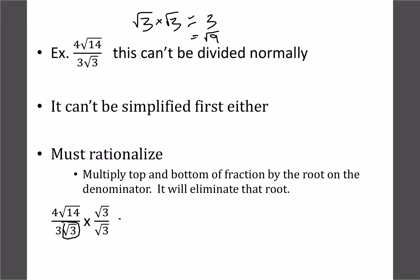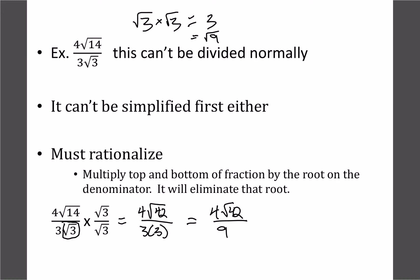For this example, we multiply top and bottom by root 3. On the top we get 4 times root 14 times root 3, which is root 42. On the bottom we have 3 times regular 3, giving us 4√42 over 9. We try to simplify root 42 further — it doesn't divide by 9 or 4 — so that's our final answer.